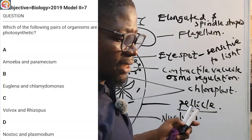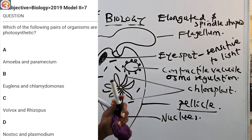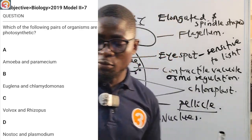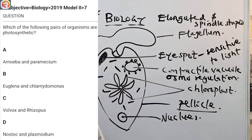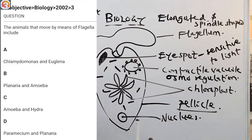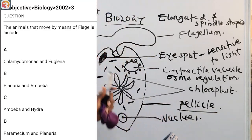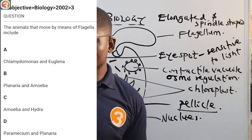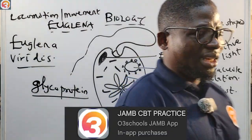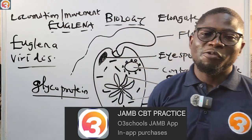Next: 2019 number seven — which of the following pairs of organisms are photosynthetic? A) amoeba and paramecium, B) Euglena and Chlamydomonas, C) volvox and rhizopod, D) nostoc and plasmodium. The correct answer is B — Euglena and Chlamydomonas, as both have chloroplasts. Finally, 2002 number three: animals that move by means of flagella include — A) Chlamydomonas and Euglena, B) planaria and amoeba, C) amoeba and hydra, D) paramecium and planaria. The correct answer is A. Those are all the things you need to know about Euglena. See you in the next episode — thank you for watching and God bless you.